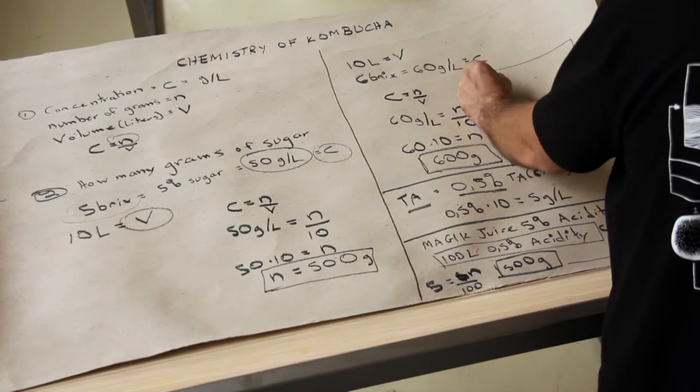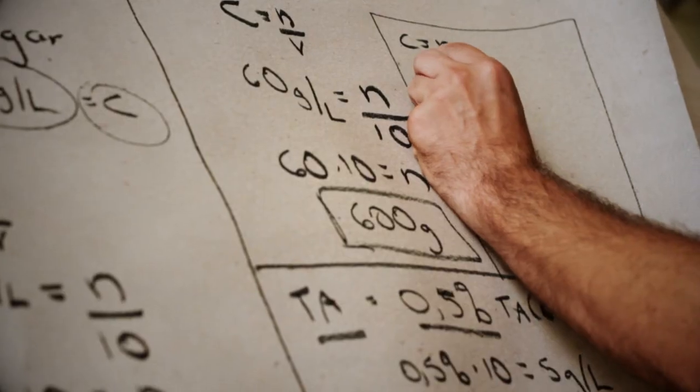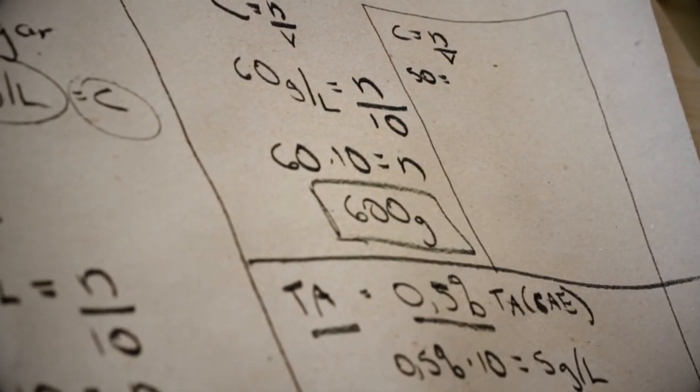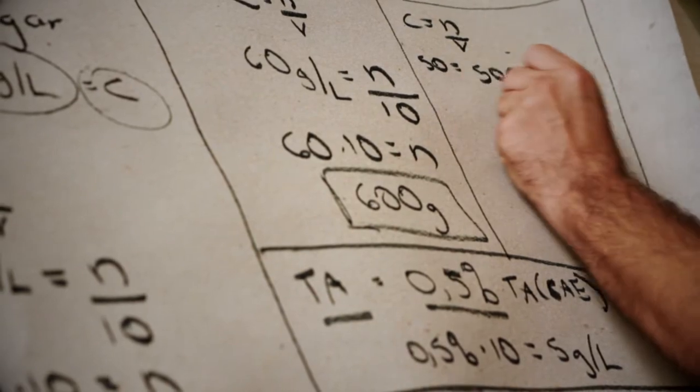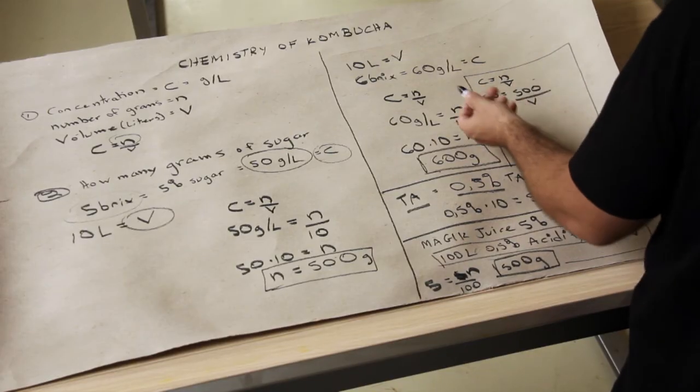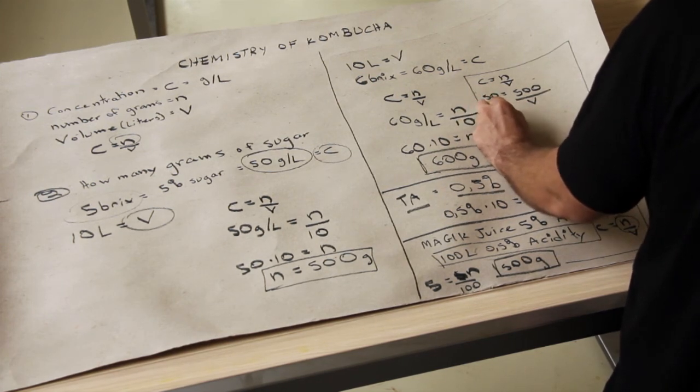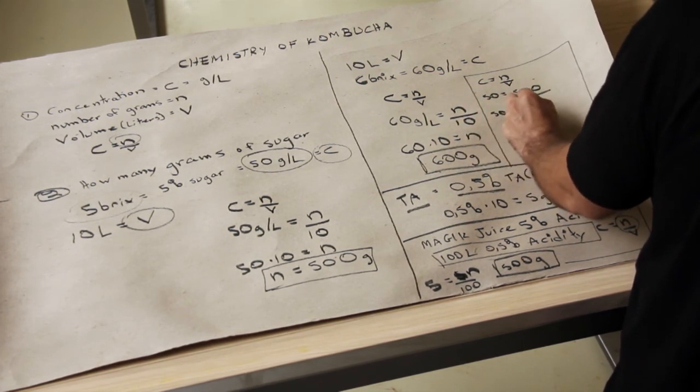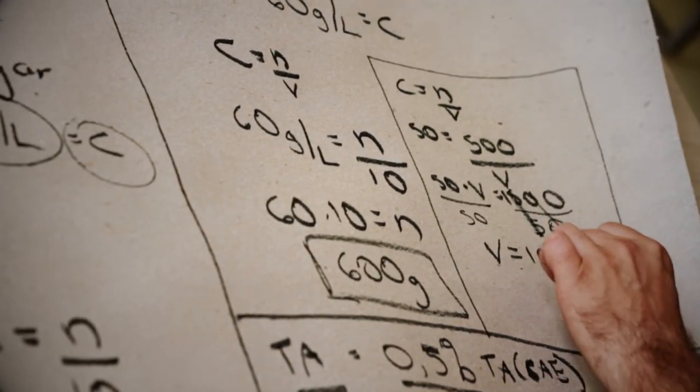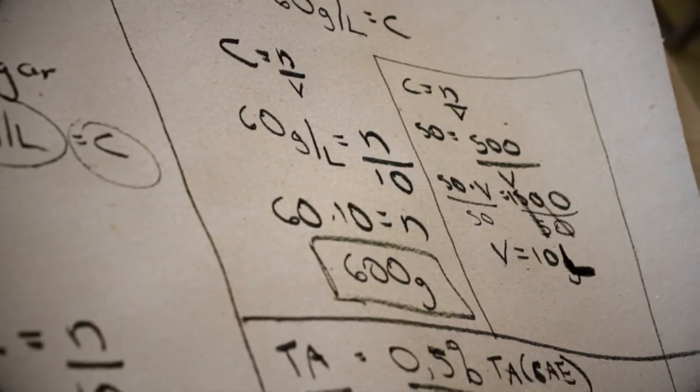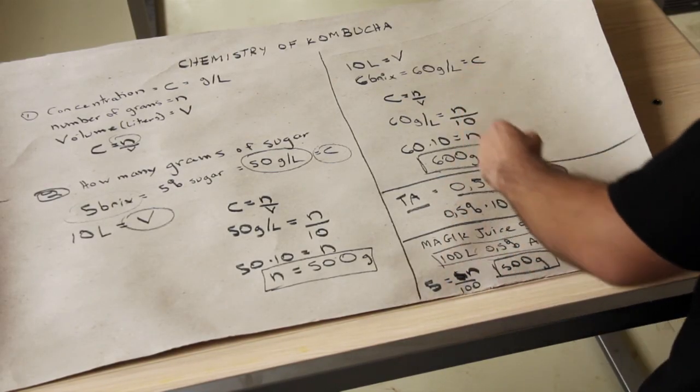So C equals N over V for the magic juice. So C is 5% acidity, so that's 50 grams per liter, because we multiply it by 10, so 50. N is what we calculated over here, so 500 grams. V is what we're looking for. So this is 50 times V equals 500. Divide both sides by 50, get V equals 10 liters. 10 liters of magic juice is what you need to add or what you need to use to get a kombucha at 0.5% acidity.